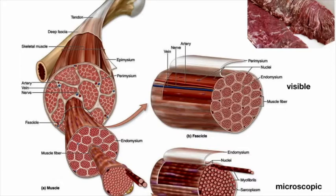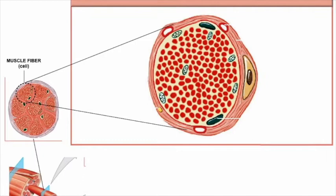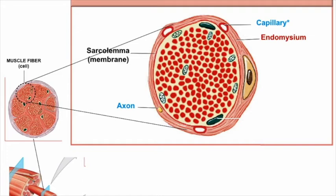The muscle cell or fiber is about the width of a human hair, and all the structures we'll be talking about are packed inside that. In a cross section of a muscle fiber, surrounding the fibers is the connective tissue layer — the endomysium — where you'll see capillaries bringing oxygen and nutrients, and nerve axons innervating the muscle fibers. Deep to the endomysium is the actual muscle cell, and its specialized cell membrane is called the sarcolemma, which carries electrical impulses along the cell's length.